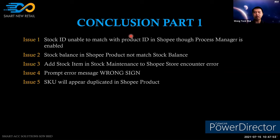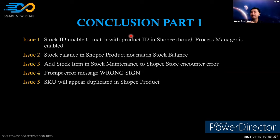Clarification: the earlier point about not being able to map one stock ID to two Shopee SKUs applies to two different stock IDs, not variants. For variants, you can have multiple rows in the matching.